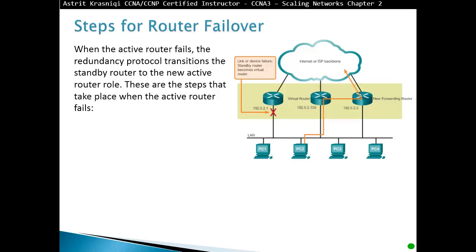Steps for router failover. When an active router fails, the redundant protocol transitions the standby router to the new active router role. We have physical routers keeping this virtual router alive. One router will be the active router and the second router will be the backup or standby router. If the active router fails, the standby will become the new active router.